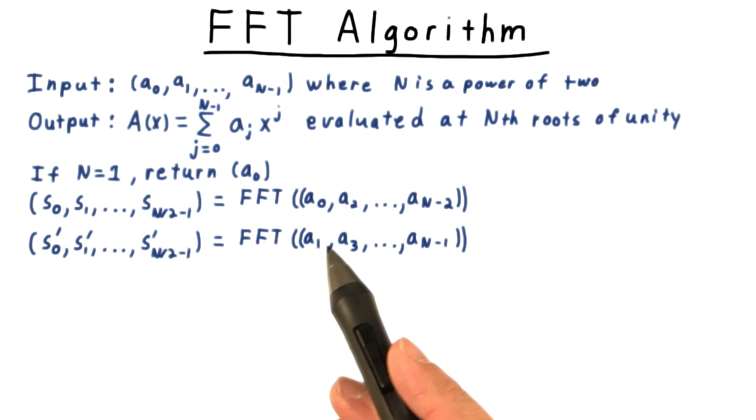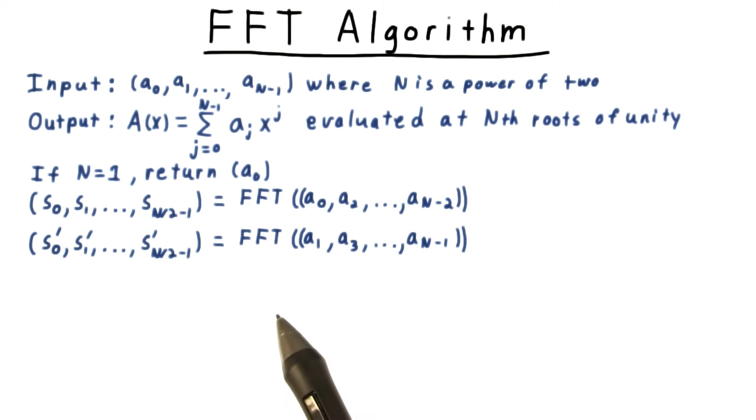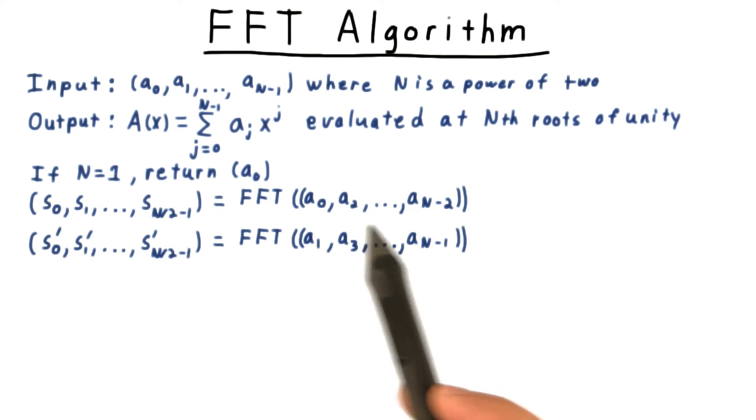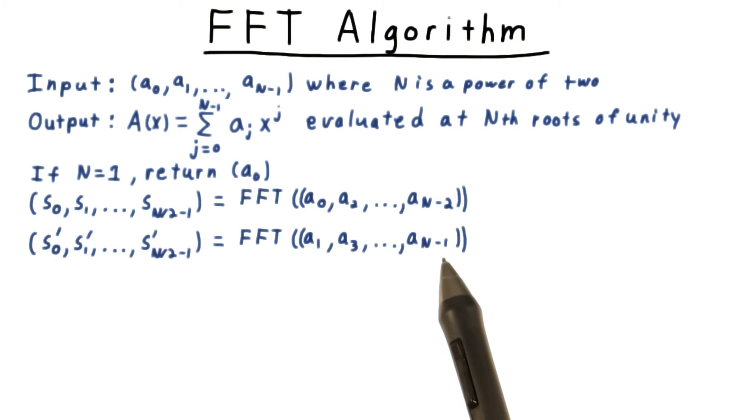If n is greater than 1, then we call the fast Fourier transform recursively once with the even coefficients and once with the odds.